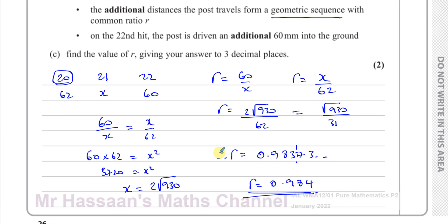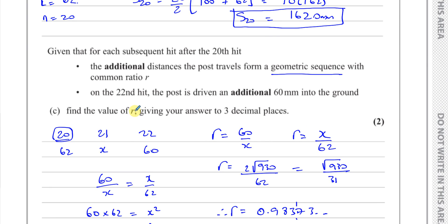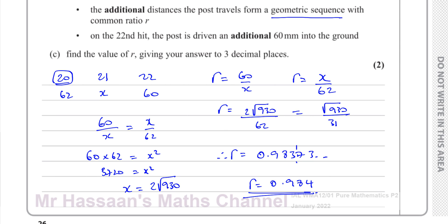So that's part C — the common ratio R equals the square root of 930 divided by 31, which is approximately 0.984.